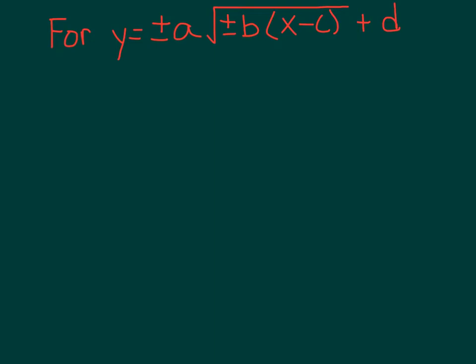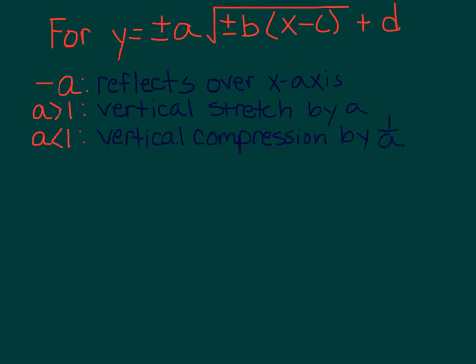So now we're going to talk about transforming it. So here's what transformations we have, same transformations we've been working on all year, but we'll write them down anyway, just in case we forgot. A negative in front of the entire thing would reflect that graph over the x-axis. If a is greater than 1, we have a vertical stretch by a factor of a. If a is less than 1, it is a vertical compression by 1 over a, the reciprocal of a.